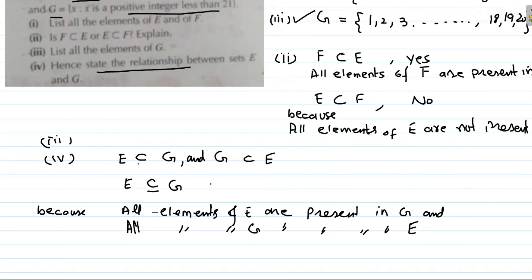So E is an improper subset of G. For a detailed discussion of proper and improper subsets, I have covered it in the introduction video for this chapter — the link is in the description.